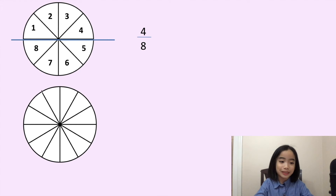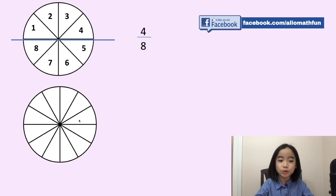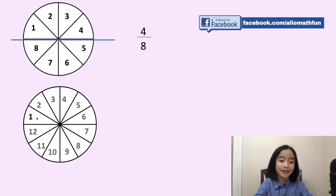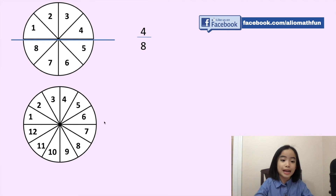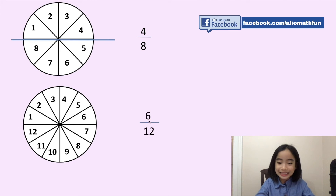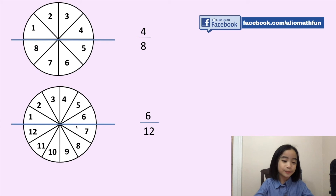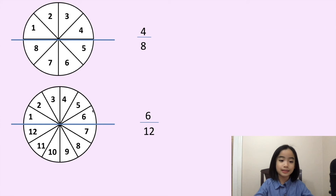Now, let's look at this pizza. I have divided it into twelve small equal slices. Here, I have marked it by numbers. We know that six slices are half of twelve slices. So, the fraction is six-twelfths. Here, I have put the line in the middle to show that six pieces are half of the pizza.